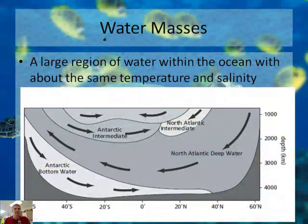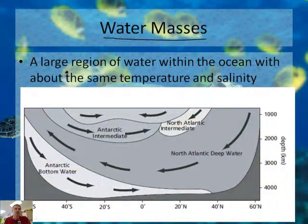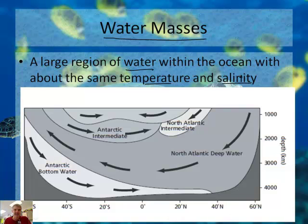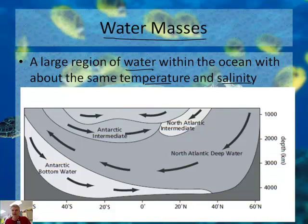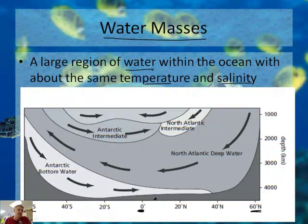Now let's talk about the big picture here. We're talking about something called water masses — a large region within the ocean with about the same temperature and salinity. It turns out there are different regions of the ocean with similar temperature and density. Looking at this diagram from your book, at 60 degrees south and 60 degrees north latitudes, up close to the poles — North Pole, South Pole — and this would be the equator.